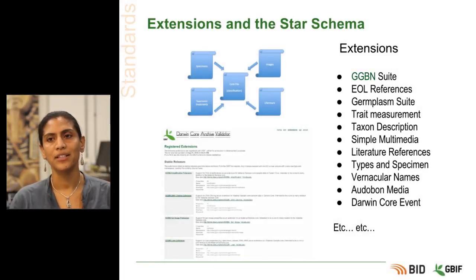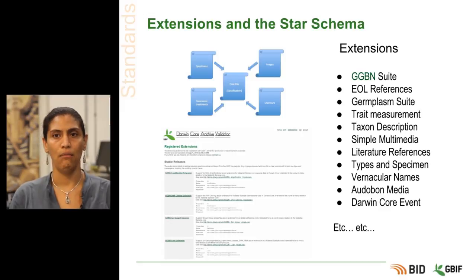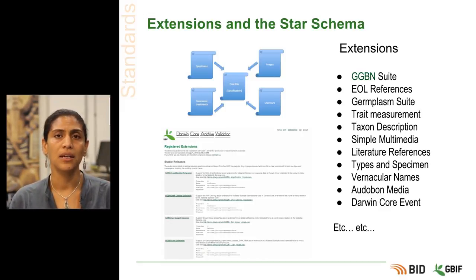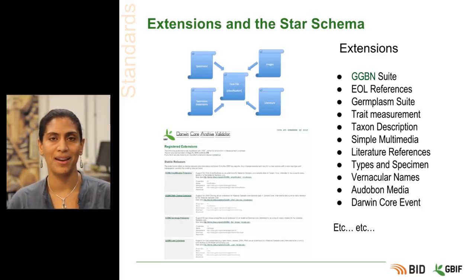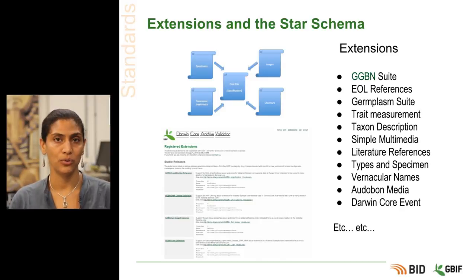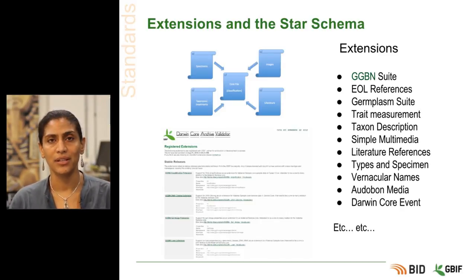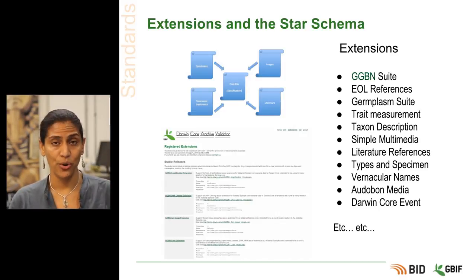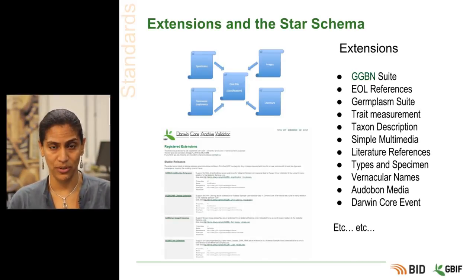Let's explore the Darwin Core standard a little more. In essence, it can be seen as a standard containing the definitions of the core fields used to describe a natural history occurrence, be that a physical specimen or a sighting. It certainly does not include every variable or parameter that may be measured or recorded about that occurrence. These, in general, will be included in separate supporting modules called extensions.